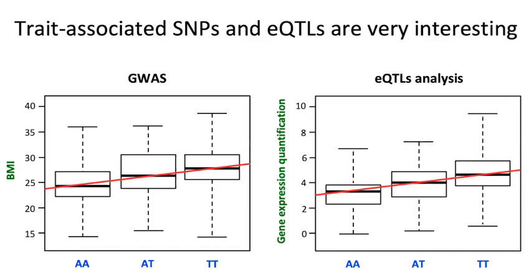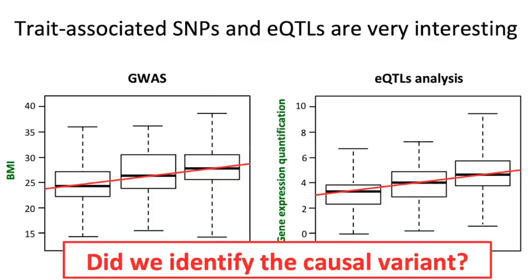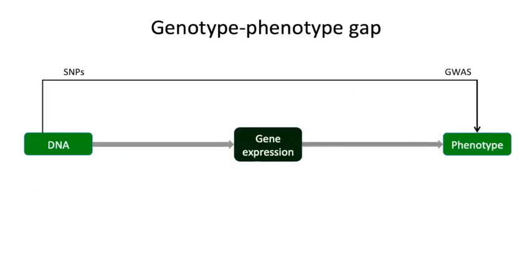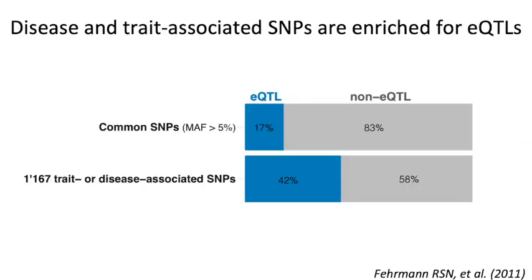But if we find that a SNP is associated with a phenotype and it's also an eQTL for a certain gene, can we say that we identified the causal variant? Unfortunately, it's not that easy, because even if recent studies show an enrichment of QTLs among trait-associated SNPs, given the number of QTLs in the genome, many of these overlapping associations are just coincidental and not driven by the same functional variant.